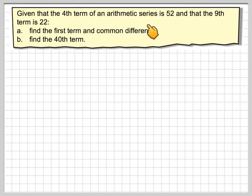Given that the 4th term of an arithmetic series is 52 and the 9th term is 22, find the first term and common difference, and find the 40th term.